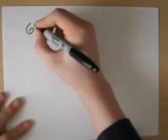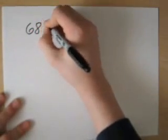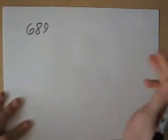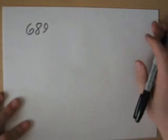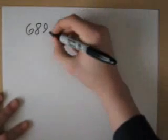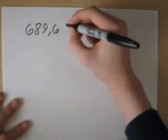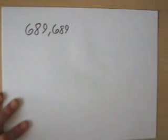So first, you just write a number. I'm going to use 689, any 3-digit number. So once you write that number down, then you just write it again. Just like that.